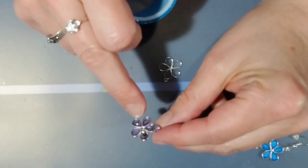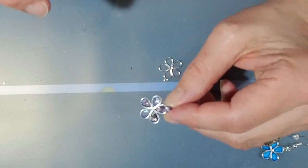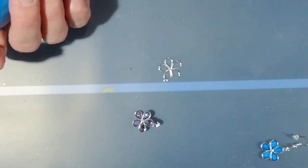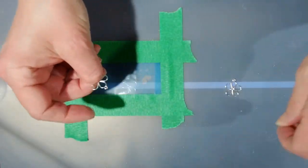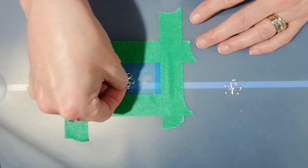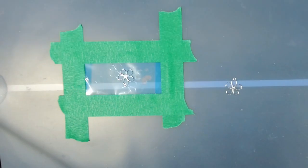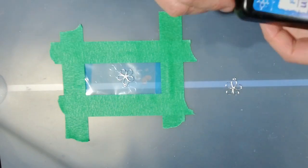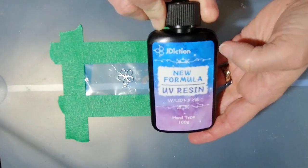I also put some pieces of abalone shell in this purple one and I will show you how it's all set up, so let's get started. I am going to put this down for the purple one and I'm just using some UV resin from J Diction.